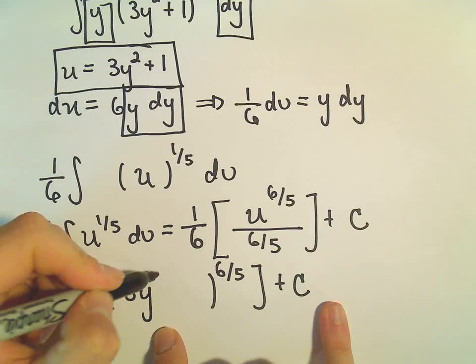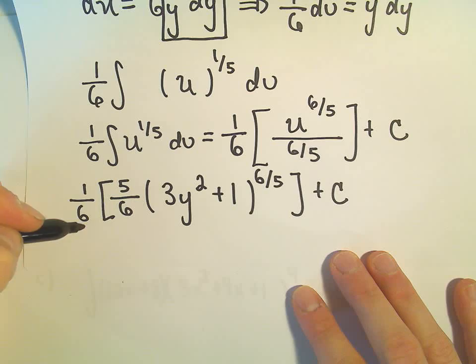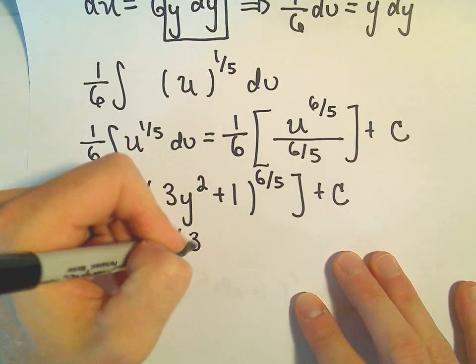So we can plug in our 3y squared plus 1. And if you want to, it never hurts, I guess we can multiply these constants. I guess we would have 5 over 36, 3y squared plus 1 raised to the 6 fifths plus c. And that will now be our anti-derivative.